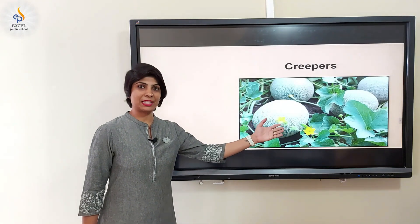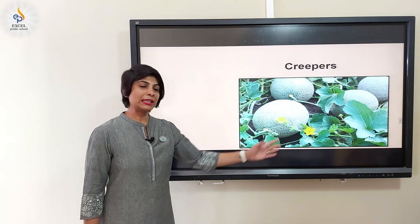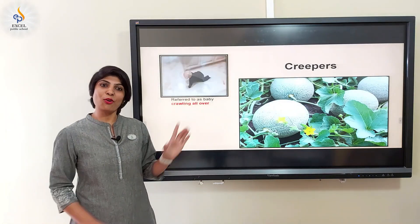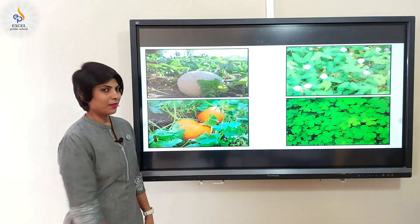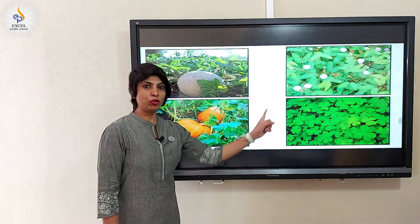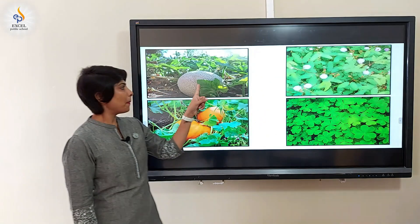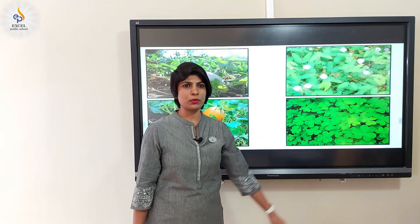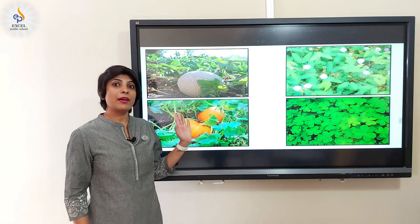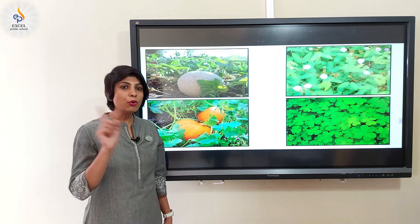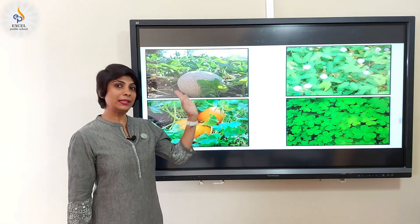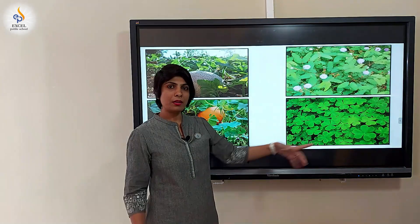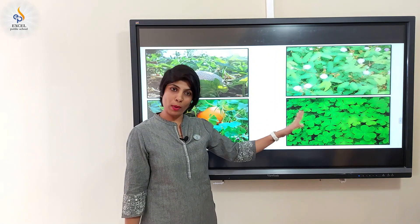Children, these are creepers. They grow along the ground; they just spread themselves like a baby crawling all over. One more thing to keep in mind: pumpkin and muskmelon are heavy fruits, but creepers need not always have heavy fruits. Creepers like touch-me-not and clover have no heavy fruits, but still they grow along the ground.